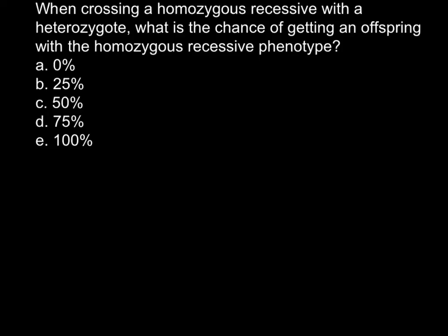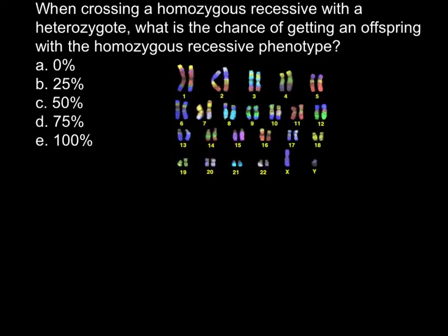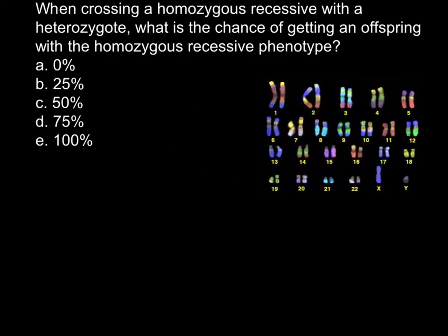In order to explain how we are going to solve this problem, let me first show you a human karyotype. As you can see, this is a male phenotype karyotype because we have an X chromosome and a Y chromosome, while a female phenotype would have two X chromosomes. I will use chromosome number one to explain what different phenotypes you may get for one particular allele.